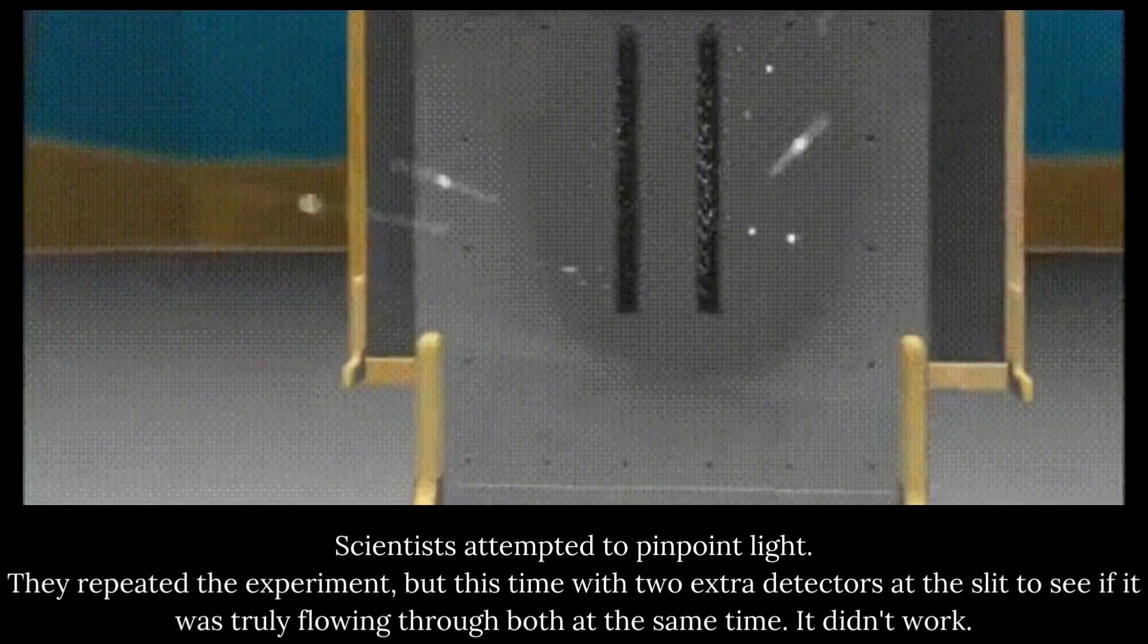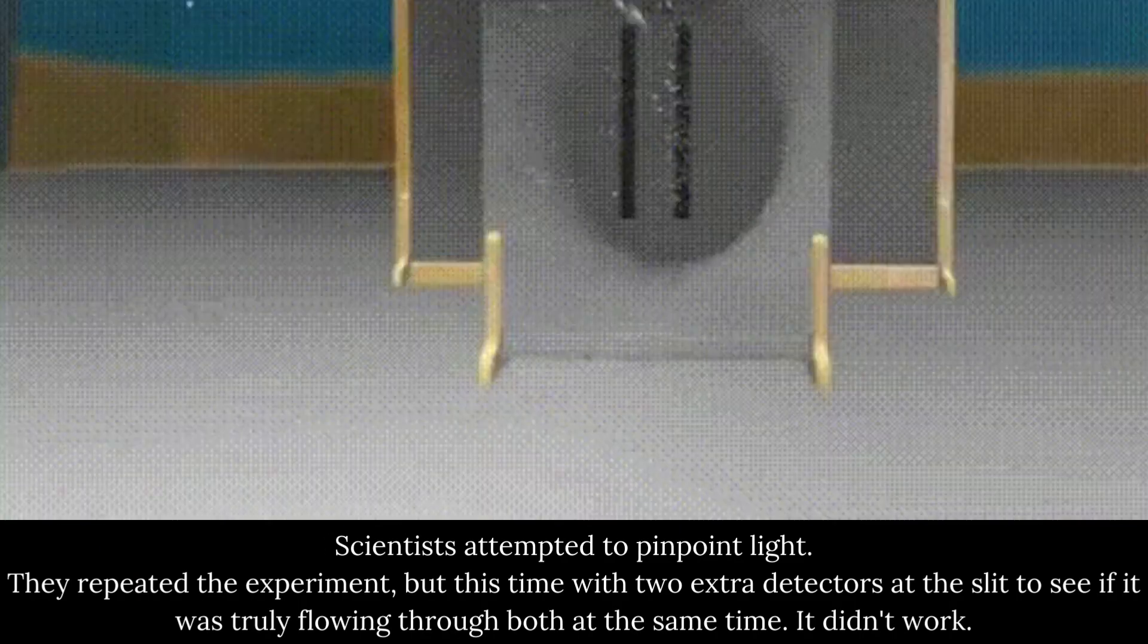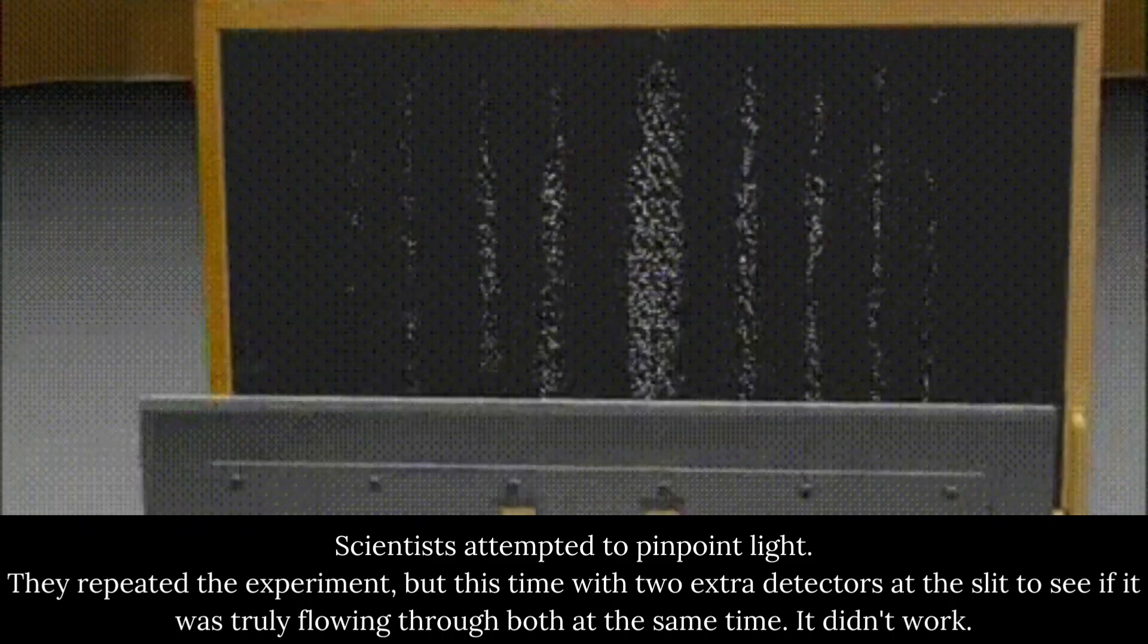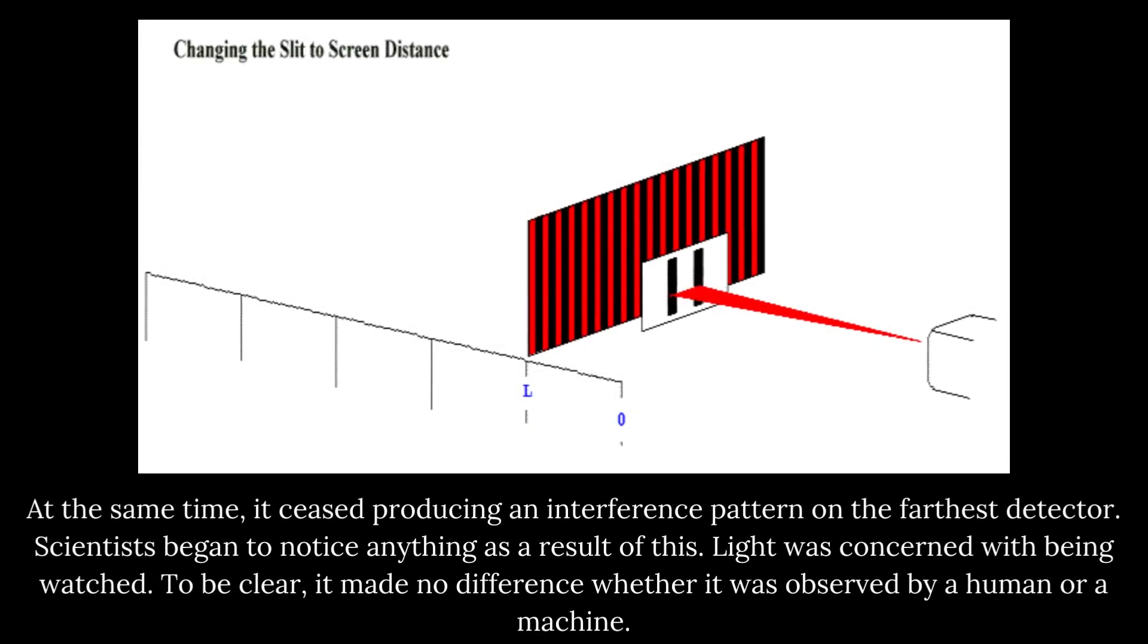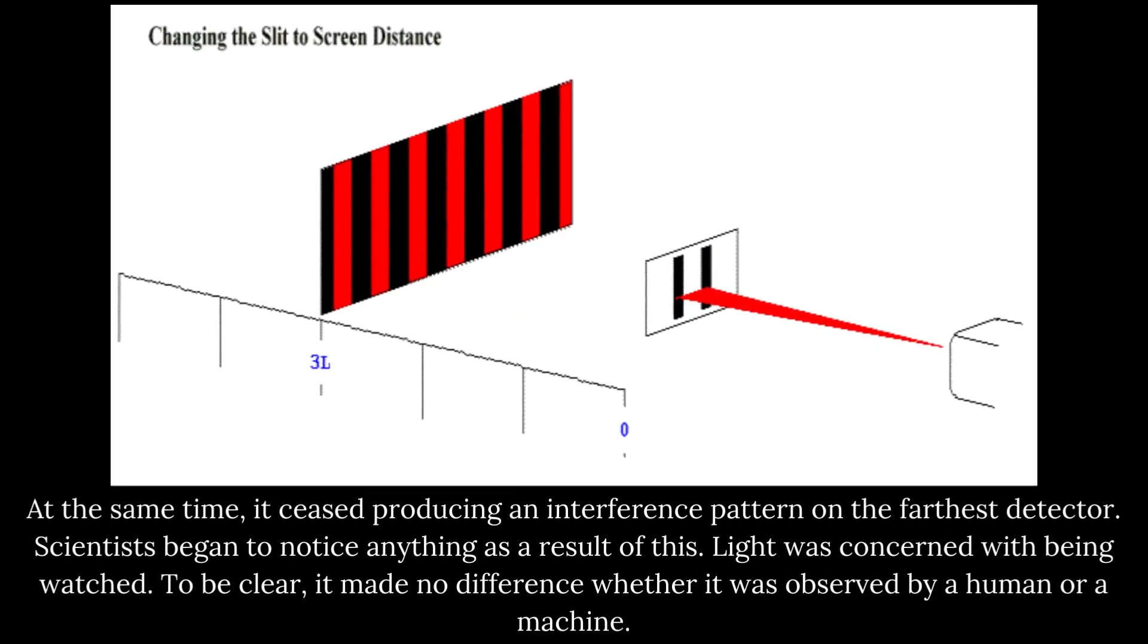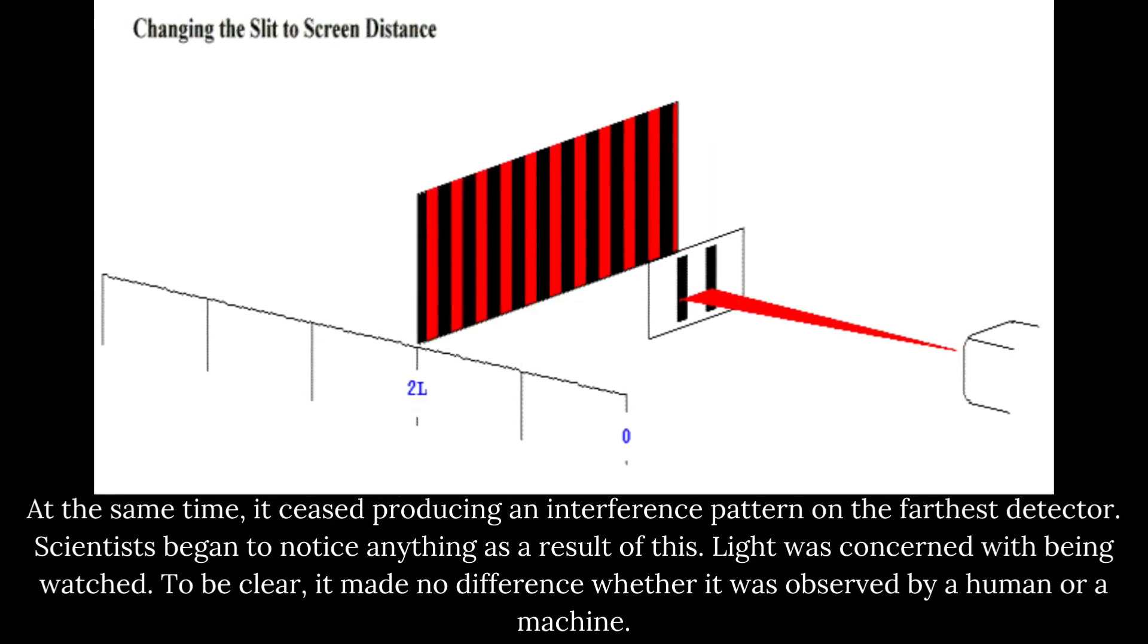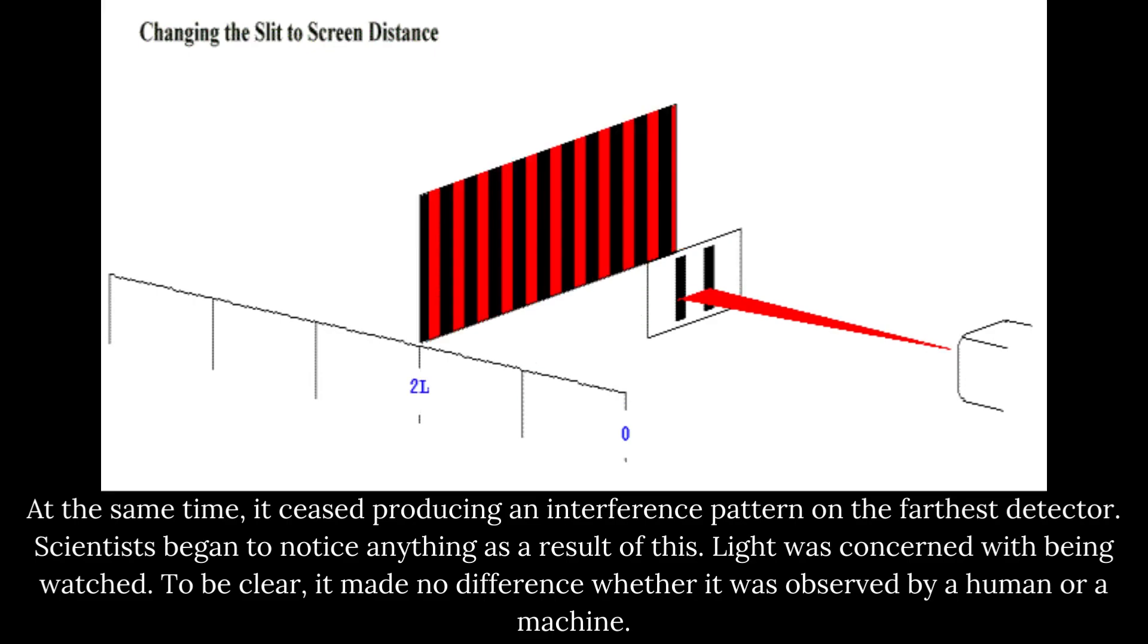Scientists attempted to pinpoint light. They repeated the experiment, but this time with two extra detectors at the slit to see if it was truly flowing through both at the same time. It didn't work. At the same time, it ceased producing an interference pattern on the farthest detector. Scientists began to notice something as a result of this. Light was concerned with being watched.